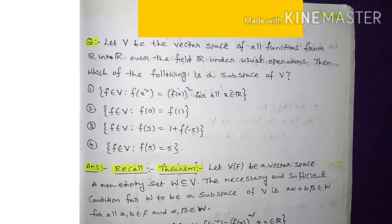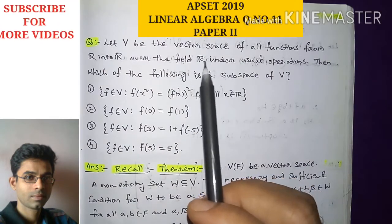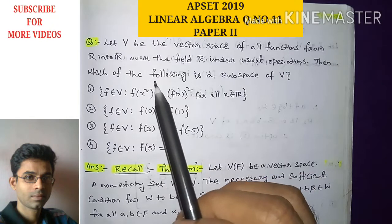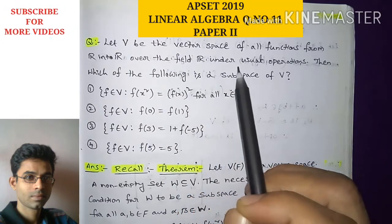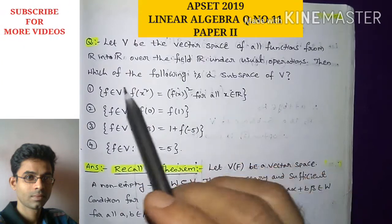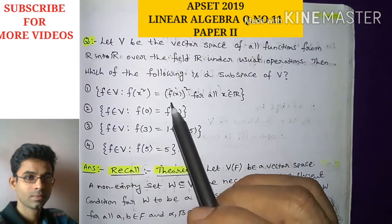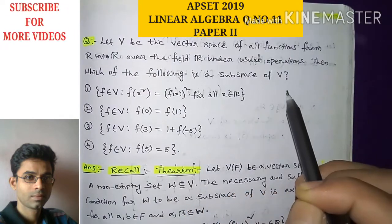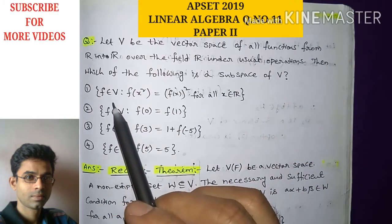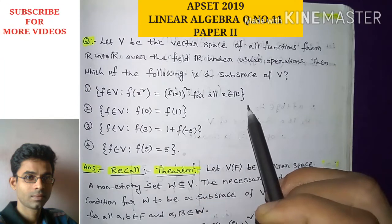Hi everyone, this is Ram Krishna, welcome to my channel. In this video I'm going to discuss GATE 2019 linear algebra question number 11 from paper 2. The question is: let capital V be the vector space of all functions from R into R over the field R — that is real numbers — under usual operations. Then which of the following is a subspace of V? Option number one: the set of all f belonging to V such that f(x²) = f(x)² for all x in R.